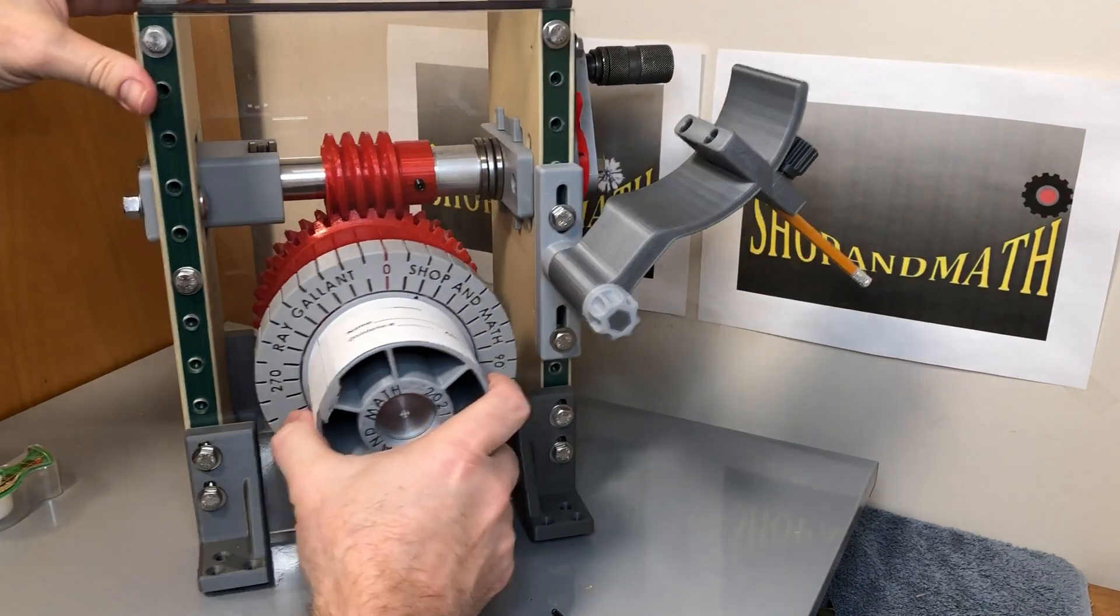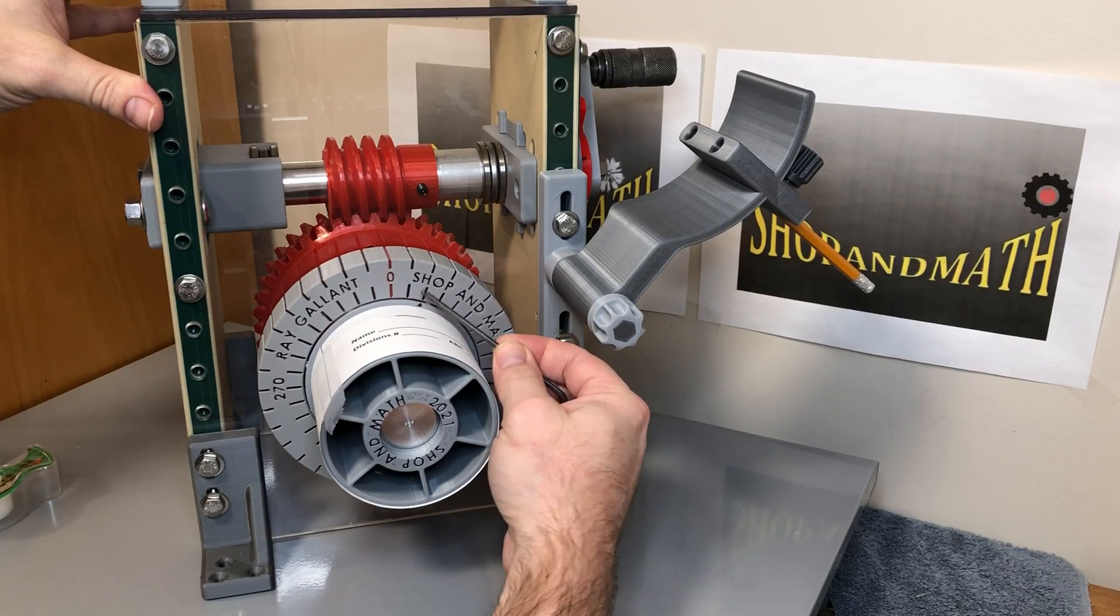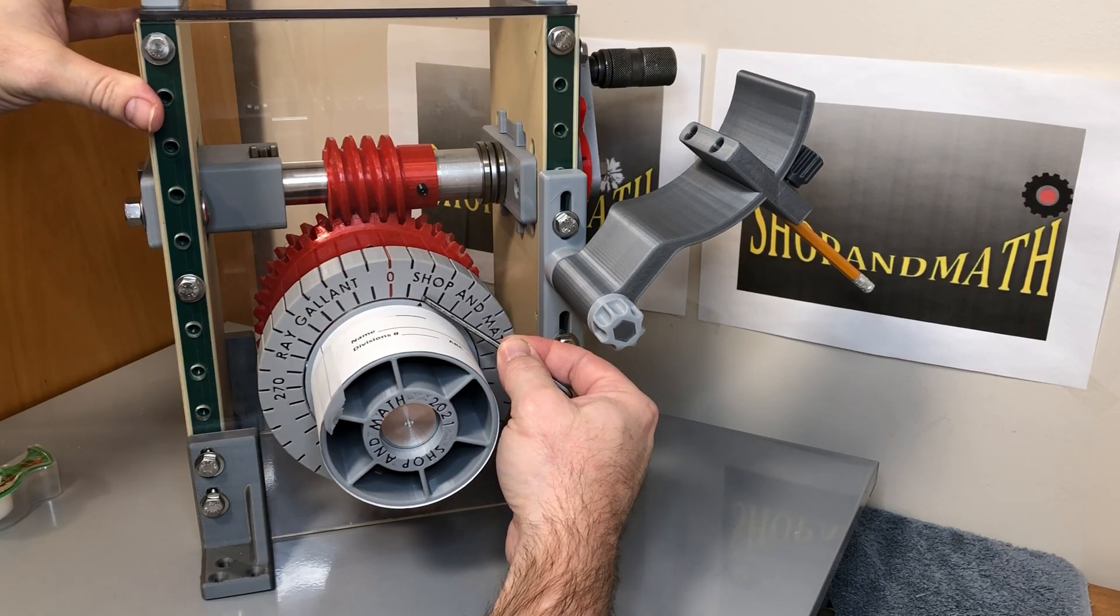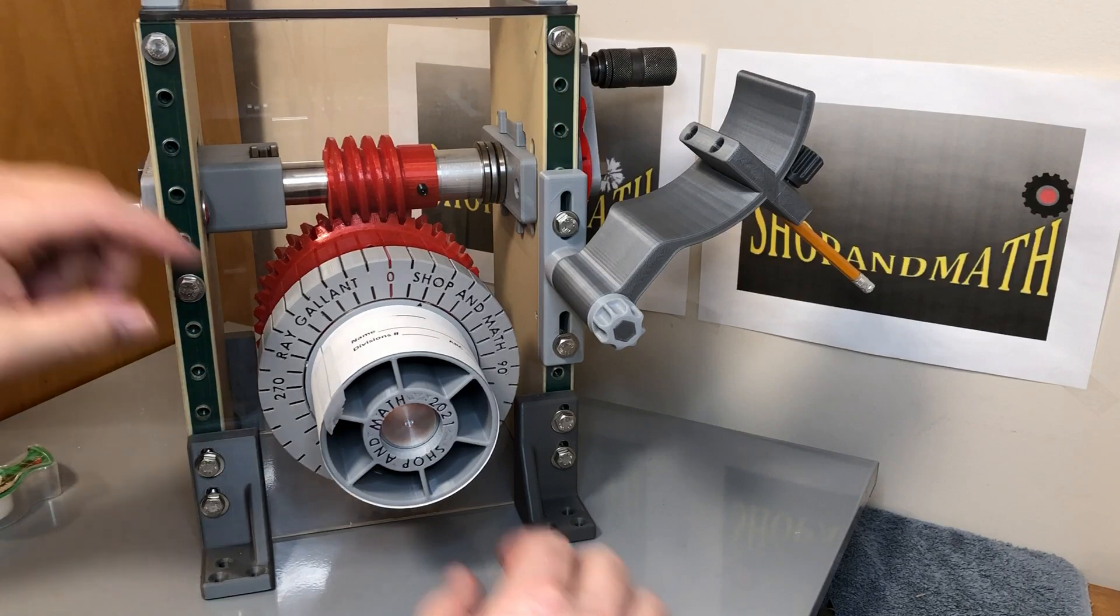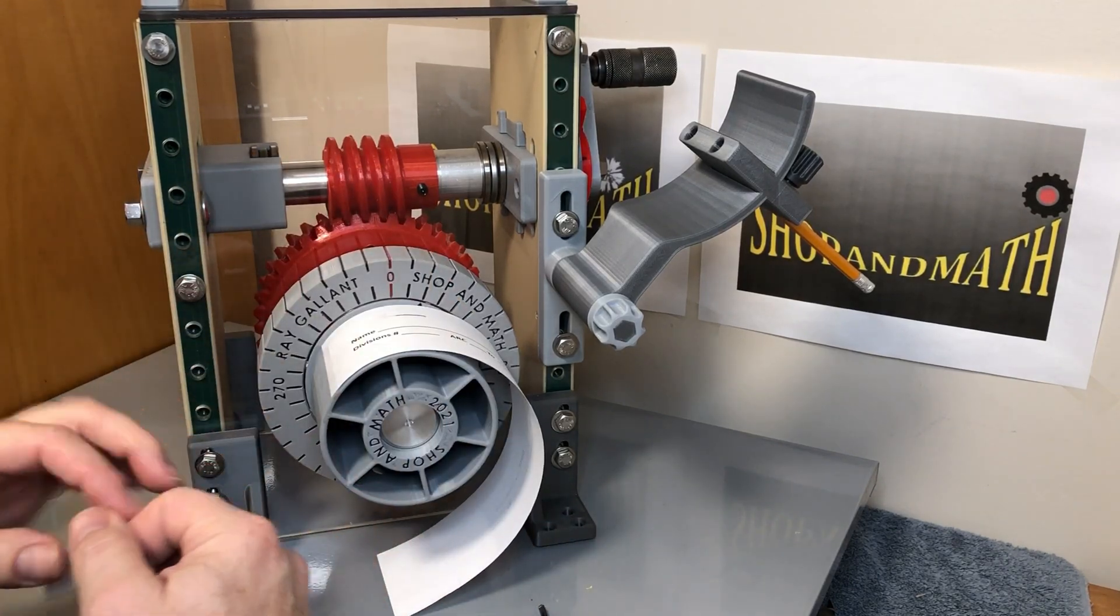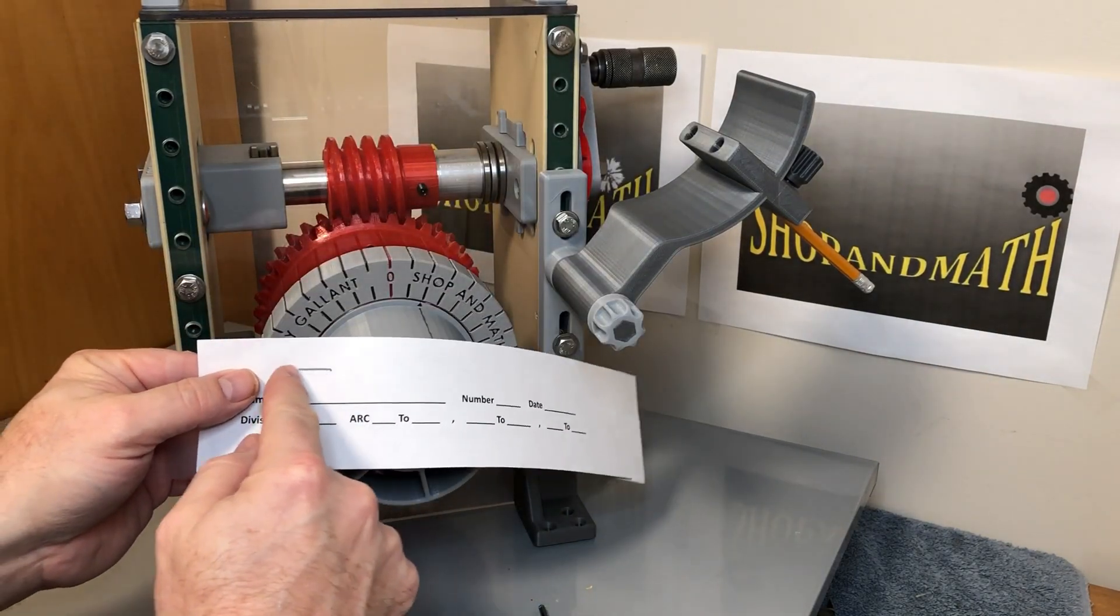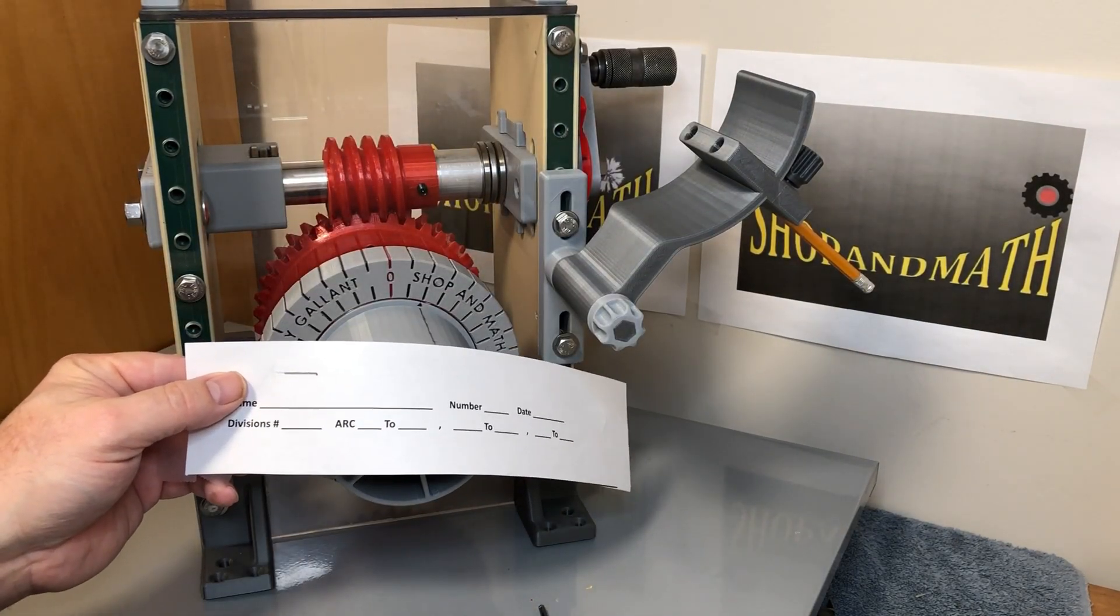But if we take a look here we can see that we're not quite at the 20 mark. So we did actually cut 19 degrees 20 minutes. Now to really tell if we cut 19 or 19 degrees 20 minutes we can actually measure the length of our line here and that'll tell us.